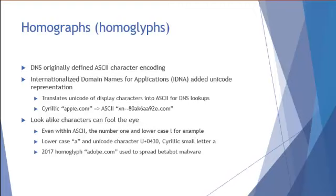Even within ASCII there is potential for confusion depending on the font displayed — for example, the number one and the lowercase L, or capital O and zero. Also, other languages such as Cyrillic introduce look-alike characters. The Cyrillic small letter A is Unicode character U+0430 and looks a lot like the regular Latin A. There was actually an attack in 2017 used to spread Betabot malware, which used a homoglyph of adobe.com where the B character was actually a Cyrillic character mapped to an internationalized domain name, and was used to drop malware. This is a significant vulnerability should a user click a link thinking they're going to Adobe or your site, only to be misdirected to a site that drops malware, smears a brand, or collects sensitive information.